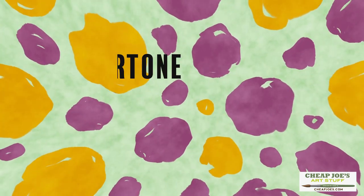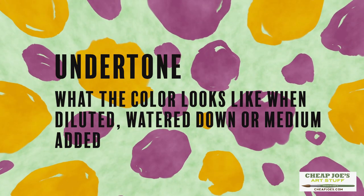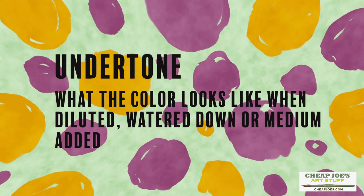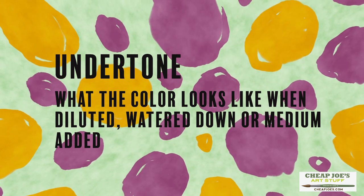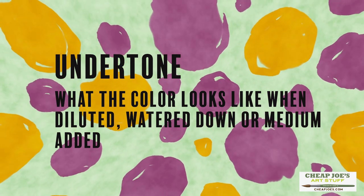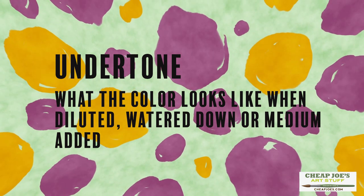However, if you're using a watercolor or an acrylic, mass tone becomes less important whereas you're really looking for what is called undertone — what does that color look like when it is diluted, watered down, or has medium mixed in it? Because that is the actual color that it will be on the surface that you've applied it to.